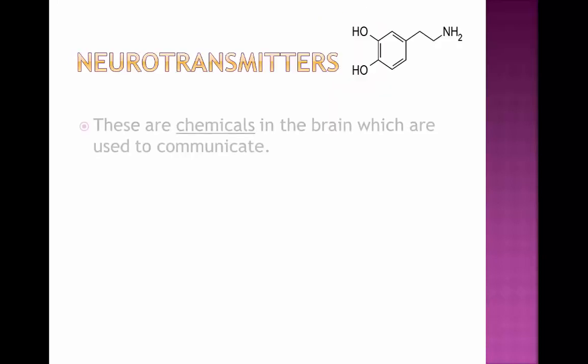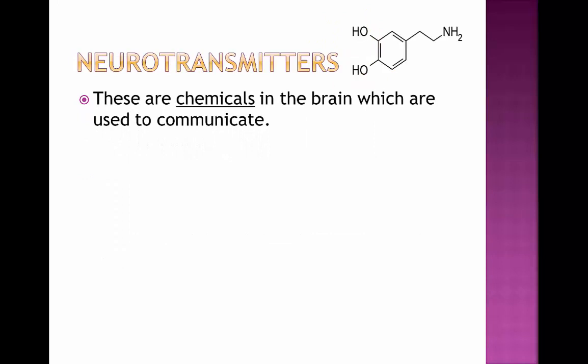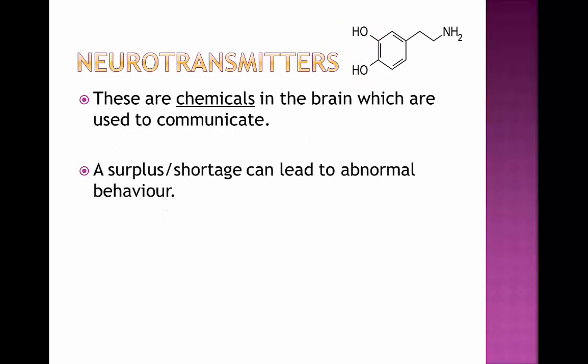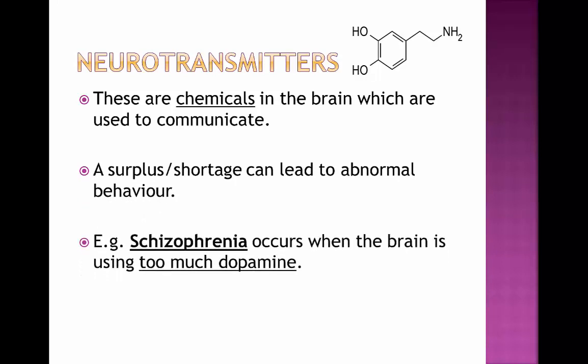The next factor is neurotransmitters. Neurotransmitters are chemicals in the brain which are used to communicate throughout the body. A surplus or a shortage of neurotransmitter activity can lead to abnormal behaviour. For example, schizophrenia occurs when the brain is using far too much dopamine, which is a neurotransmitter. So a surplus of dopamine can cause abnormal behaviour in the form of schizophrenia.